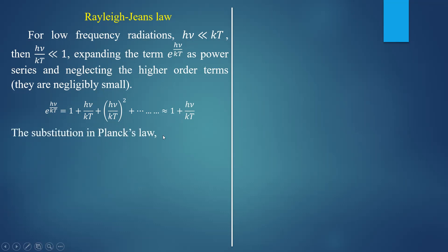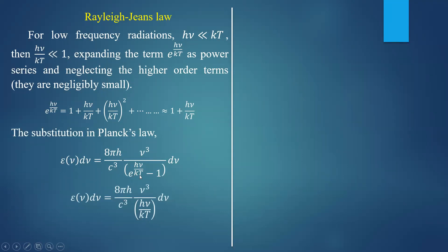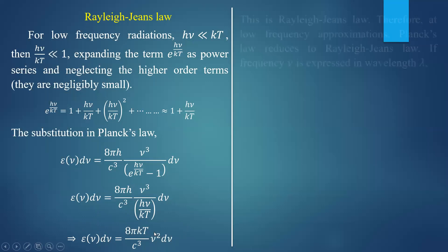Substitute this in Planck's law of radiation. Planck's law in terms of frequency is: ε_ν dν = (8πh/c³) × (ν³ / (e^(hν/kT) − 1)) dν. Substituting e^(hν/kT) ≈ 1 + hν/kT, the denominator becomes 1 + hν/kT − 1 = hν/kT. The h cancels, and finally the energy density becomes ε_ν = (8πkT/c³) ν² dν. In the low frequency region, energy density is directly proportional to ν², which is Rayleigh-Jeans law.